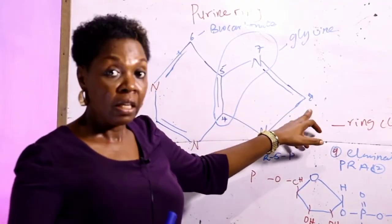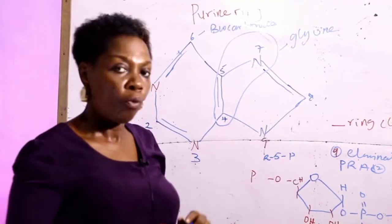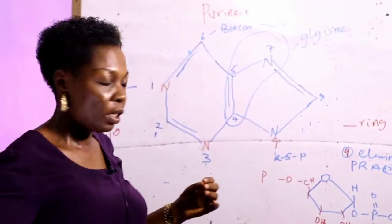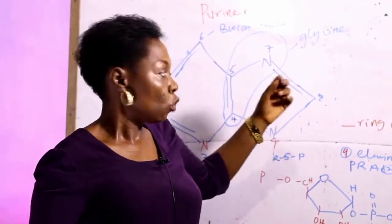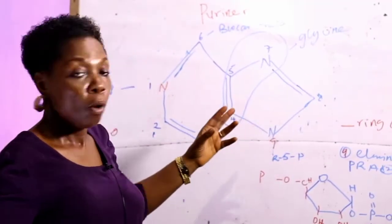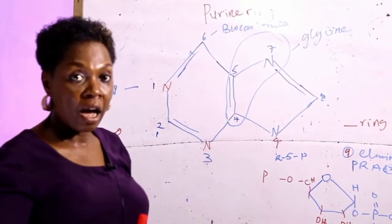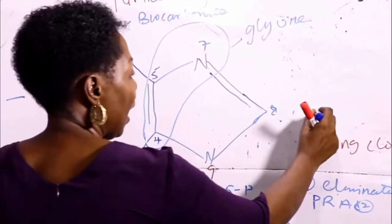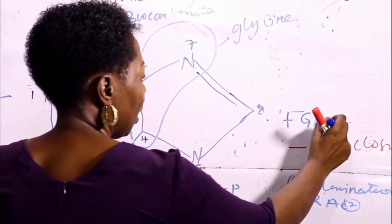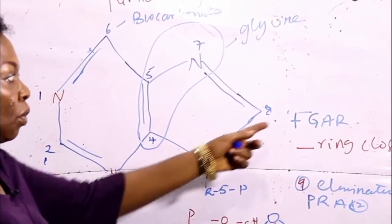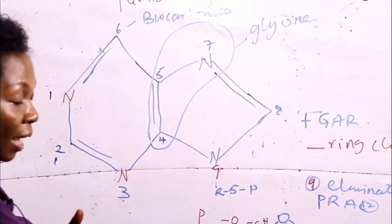The next step is the acquisition of carbon 8. Remember, the source of carbon 8 is from folate — tetrahydrofolate furnishes this carbon atom — and then you have the compound FGAR, that is formylglycinamide ribotide.